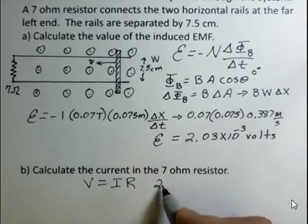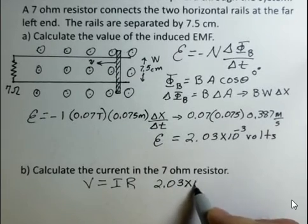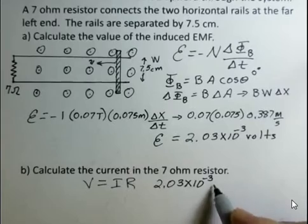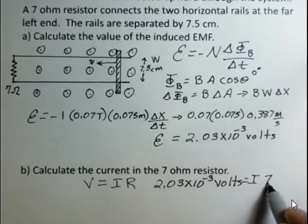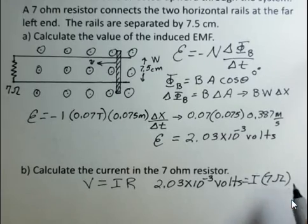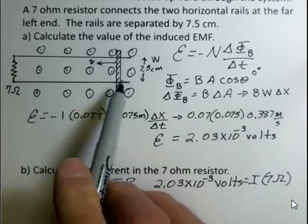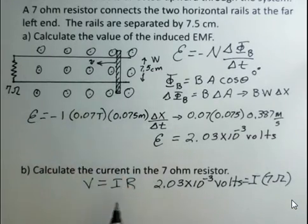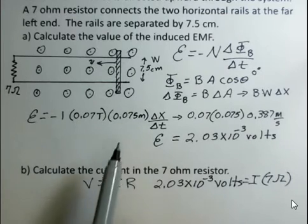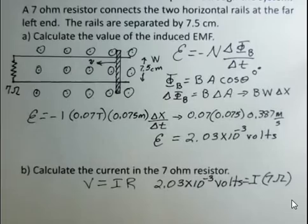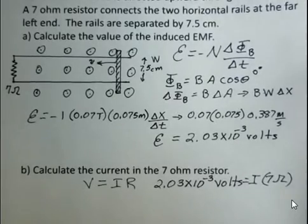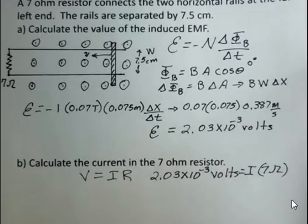We have the voltage, 2.03 times 10 to the minus 3 volts. We have 7 ohms in this circuit. If we assume that the rails and the rod and the junctions here have no resistance, an ideal physics problem, all the resistance in the 7 ohm resistor. So that's the resistance of our circuit.